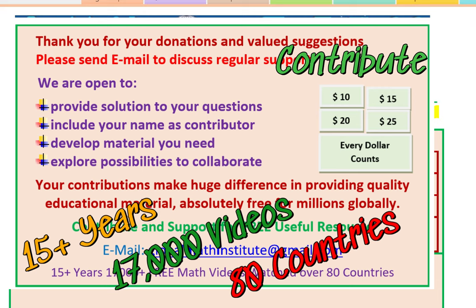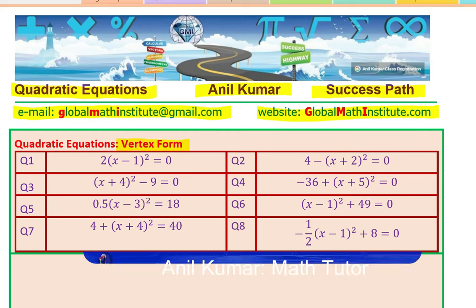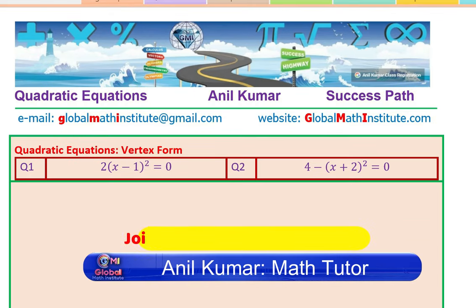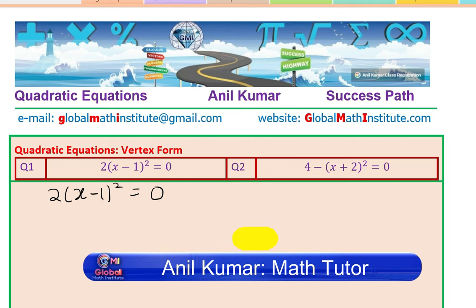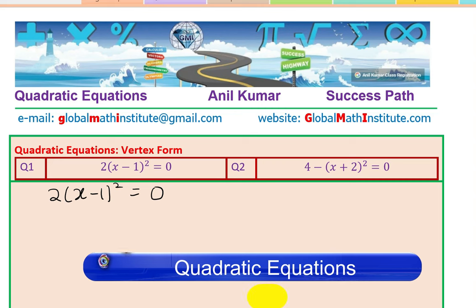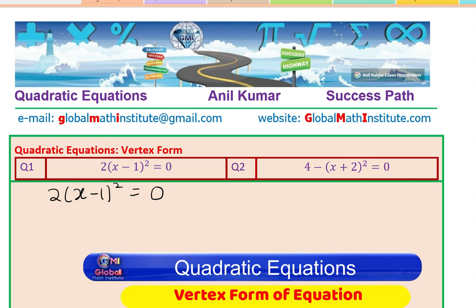Now let's begin with the solution of these questions and understand their strategies. Here are the very first two questions. The very first one is 2 times (x minus 1) whole square equals to 0. We need to solve — meaning we need to find the value of x which will make this equation true.